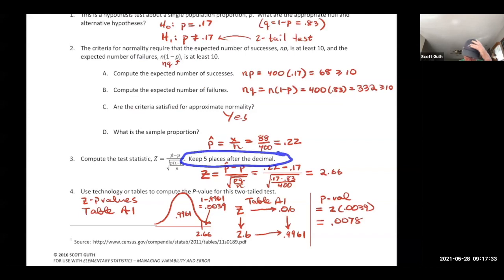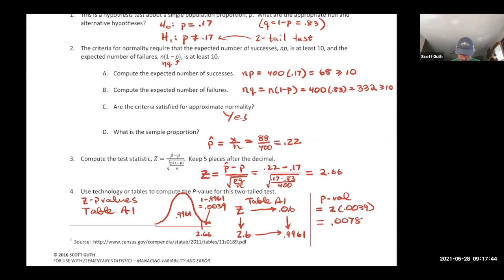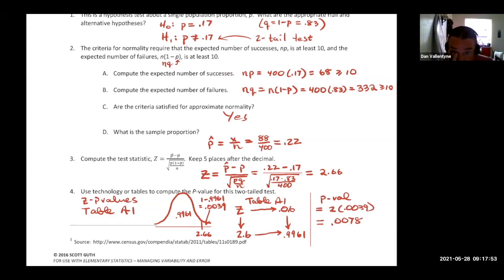For greater precision, the z-score to five decimal places is 2.66217. There's a reason we want five places — we're going to show the chi-square test gives an equivalent result.